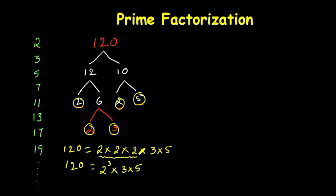Now let us discuss another example. I'm going to take 48. We can divide 48 in different ways — like 6 times 8, or 12 times 4. I'm going to take 6 times 8. You can observe that neither 6 nor 8 is a prime number, but we can divide them into prime numbers. The 6 we can divide: 6 can be written as 2 times 3.